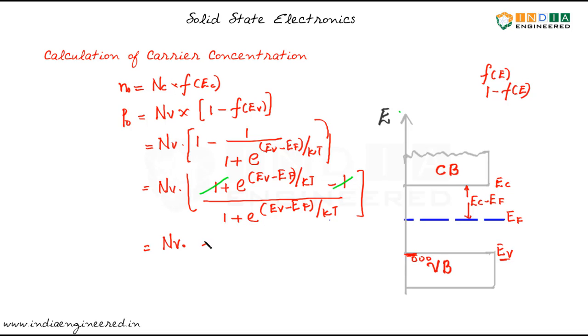So we have Nv into e power Ev minus Ef by kt divided by... So now before that let's see about this term.